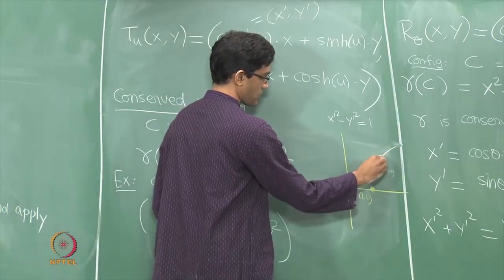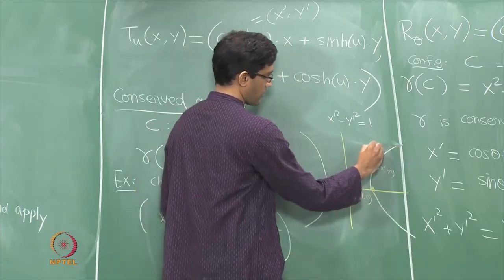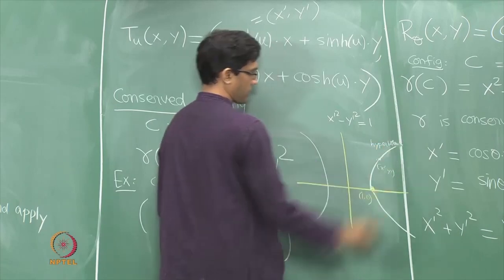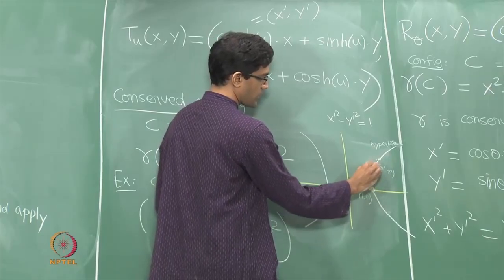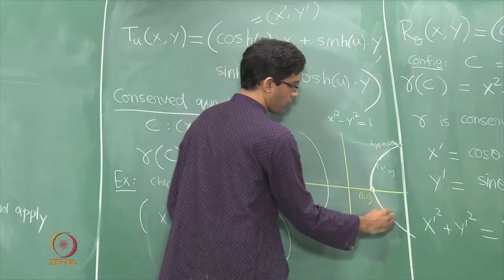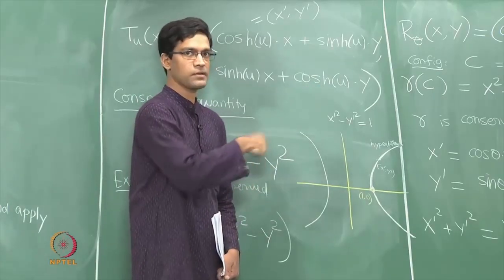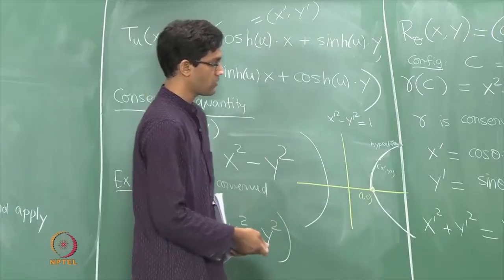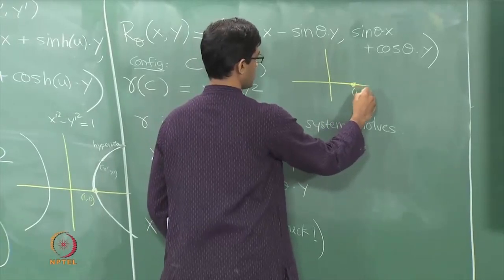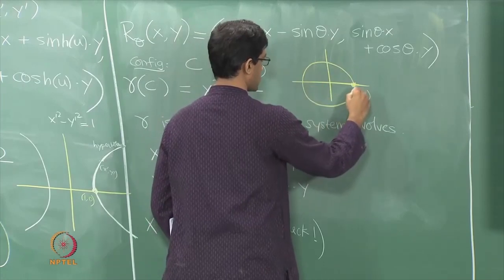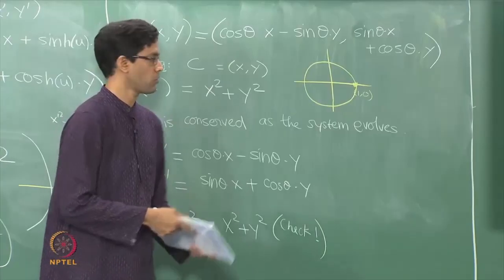Geometrically, if the initial configuration is the point (1, 0), the gamma function is 1² − 0² = 1. As the system evolves, no matter what new point x prime, y prime you reach, x′² − y′² must remain 1 — this is the equation of a rectangular hyperbola, with another branch on the other side. The configuration is constrained to lie only on this hyperbola; it cannot move anywhere else. In the earlier rotation example the analogous constraint was the circle of radius 1.